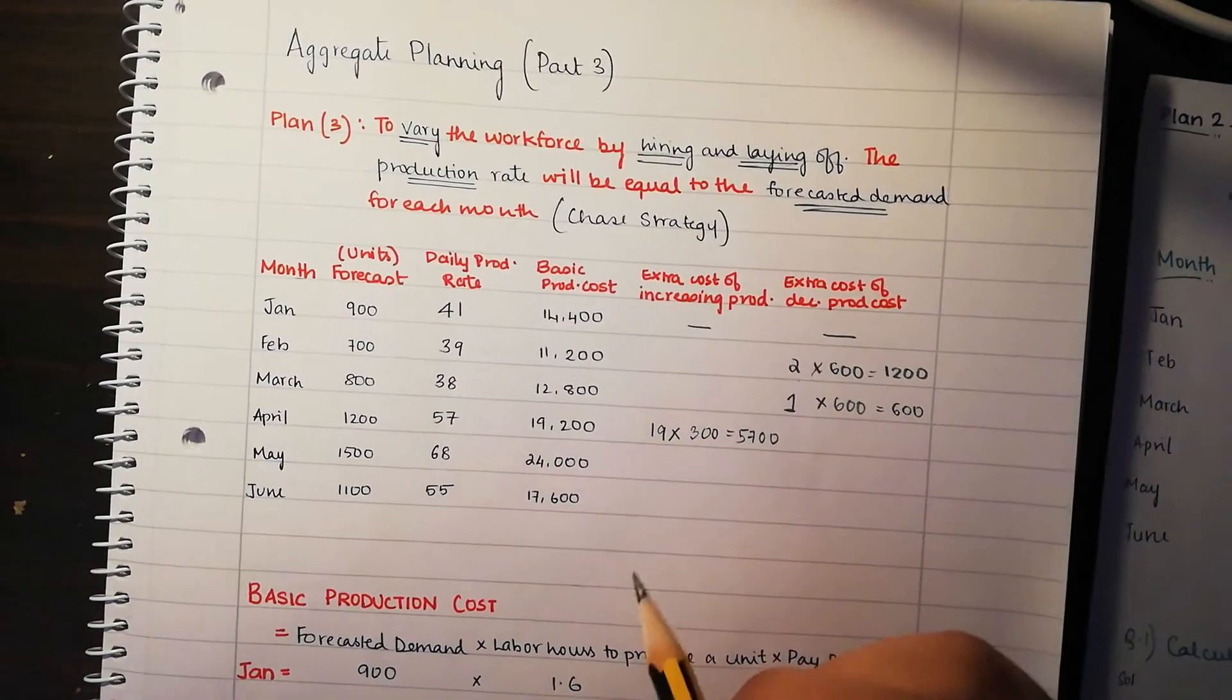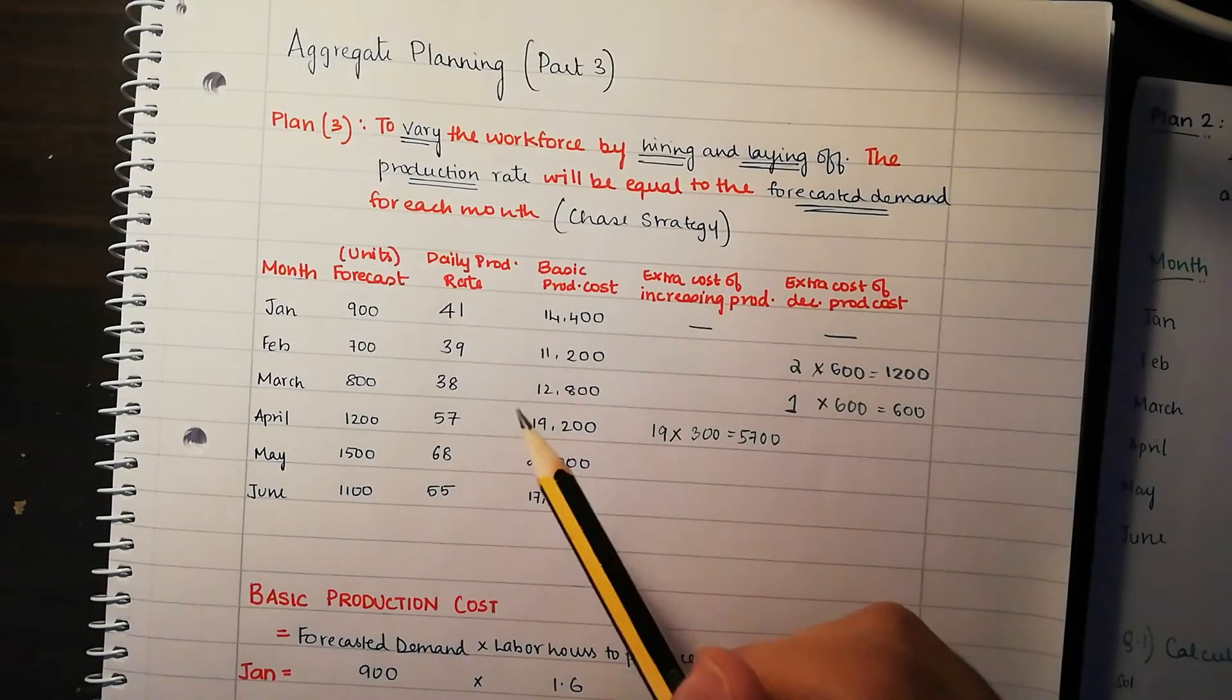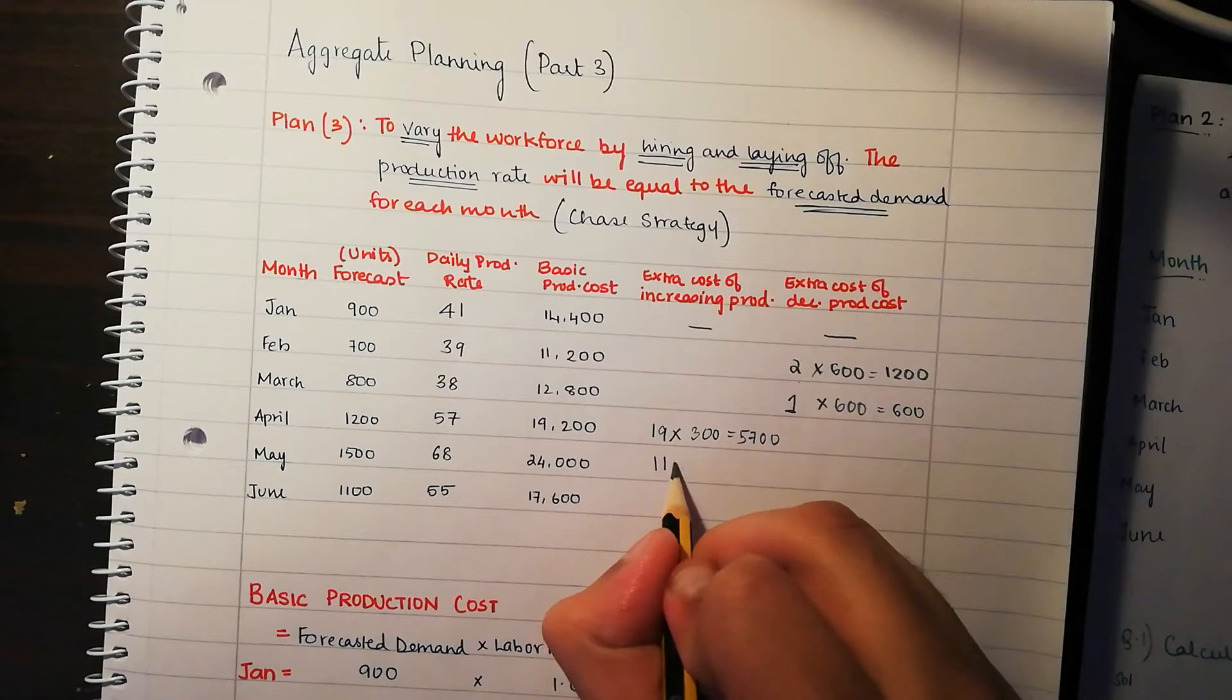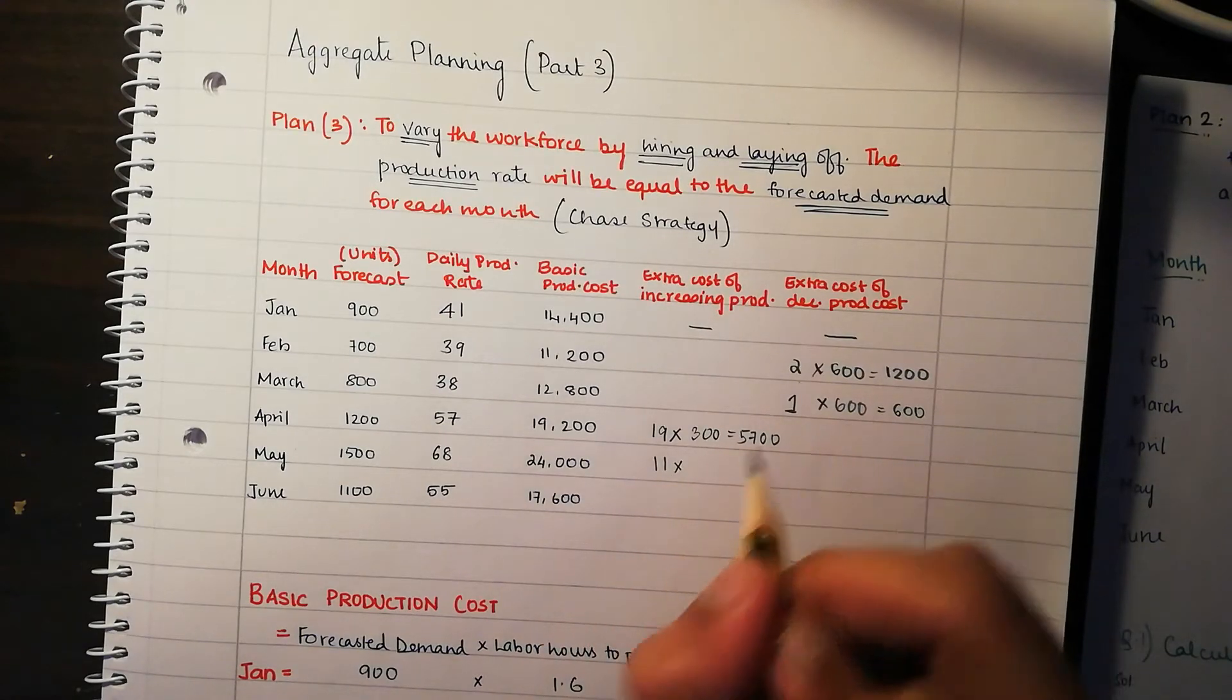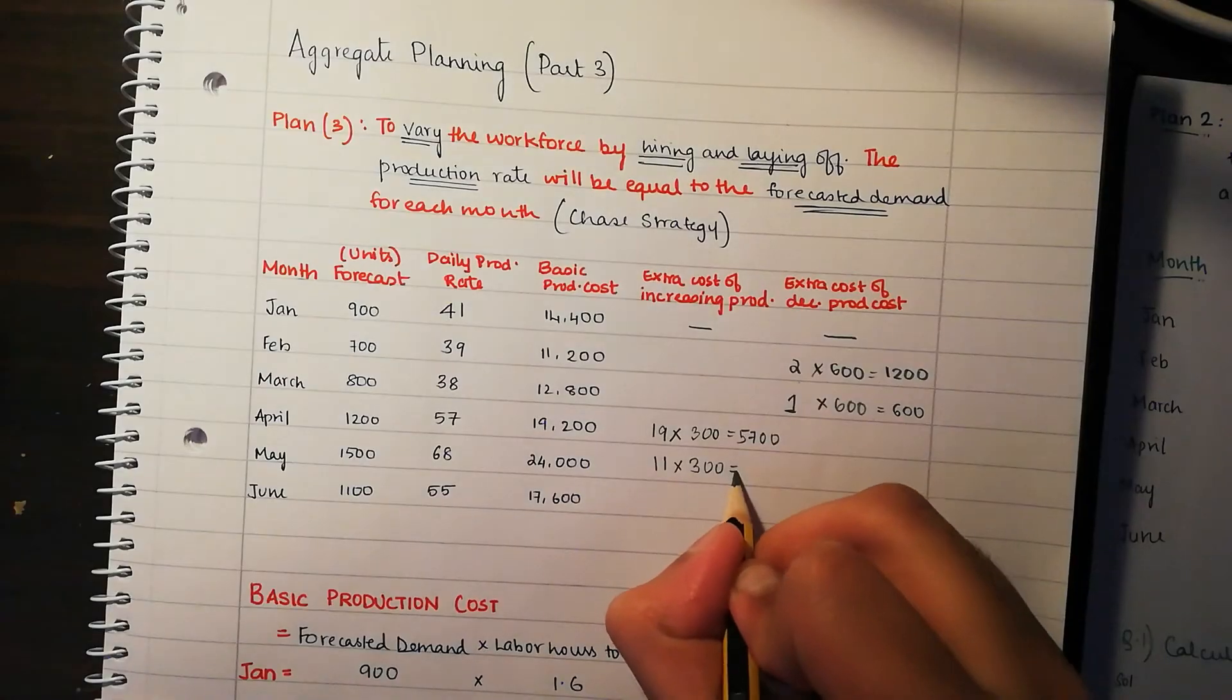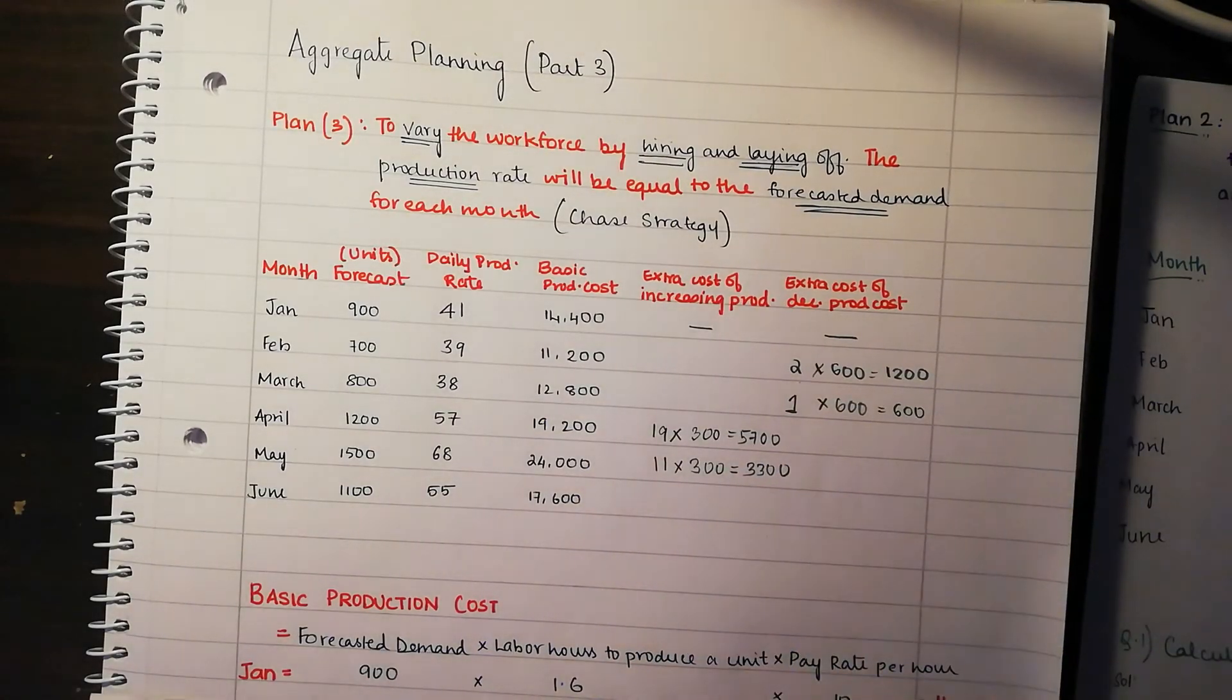From April to May, it's increasing again by 11 units because from 57 to 68, that's 11. So 11 times, not 600, but yes, your very own 300, which is going to be 3,300.